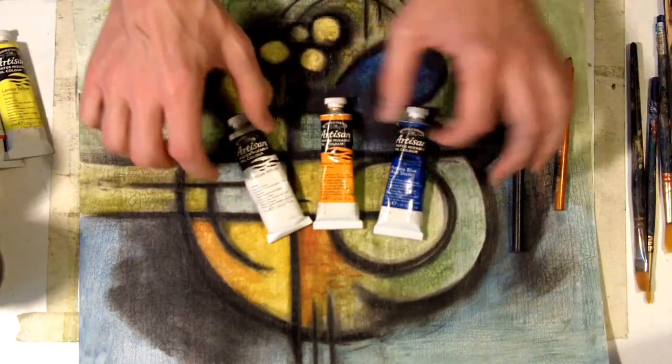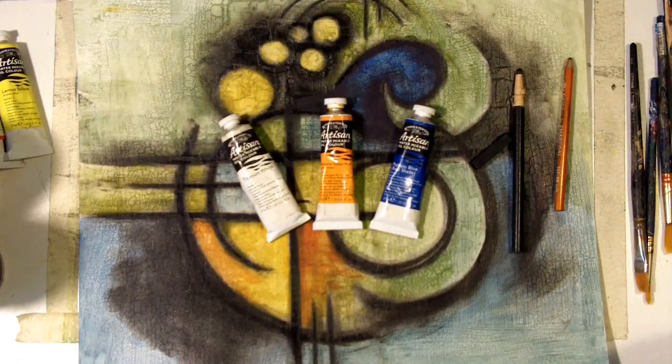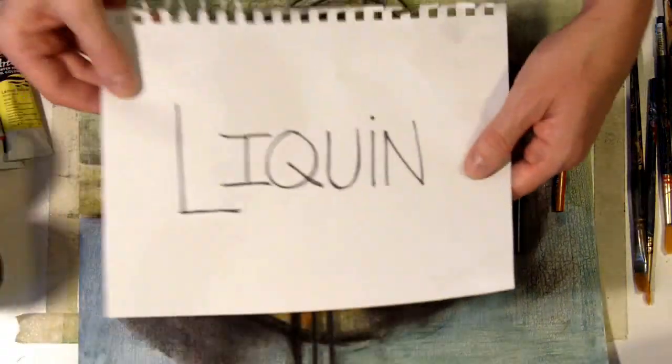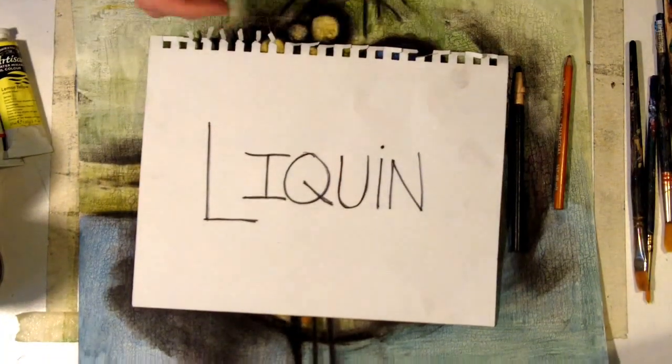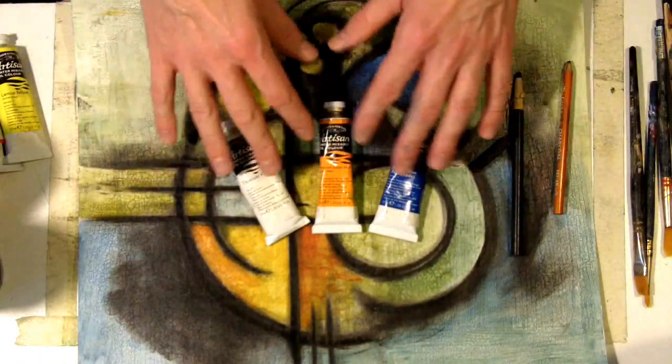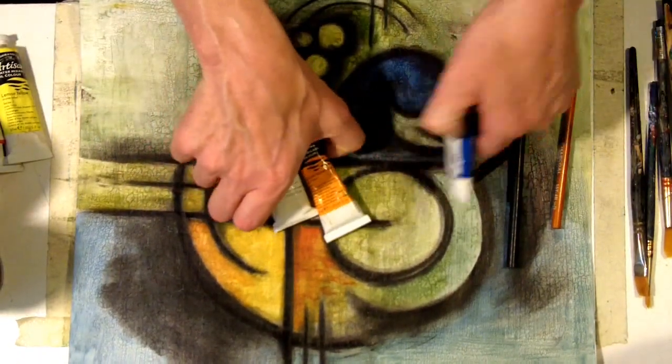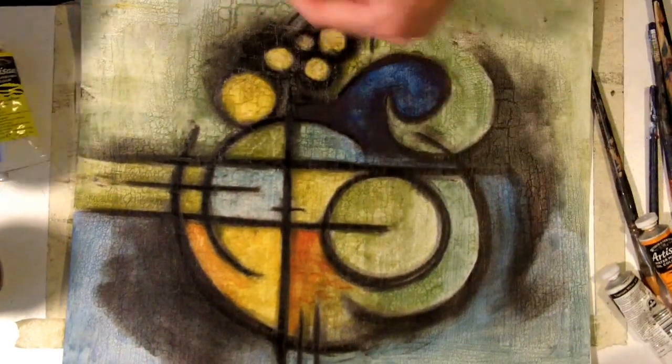If you're not going to use the water mixable kind and you're going to use traditional oil paint, you're also going to need what's called liquin. Liquin is what will help make the oil paint dry much faster. Being water-based, this is going to dry a lot faster.